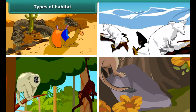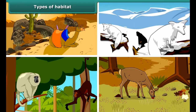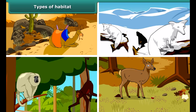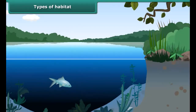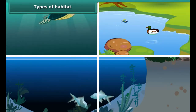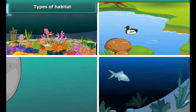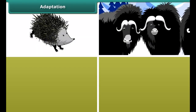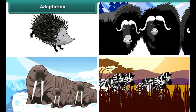Habitat is divided into two classes: terrestrial or land habitat, and aquatic or water habitat. The habitat of living organisms found on land is terrestrial habitat — desert, mountains, forest, and grasslands are examples of this category. Whereas the habitat of living organisms found in water is aquatic habitat — sea, ponds, oceans, and lakes are examples of this category.